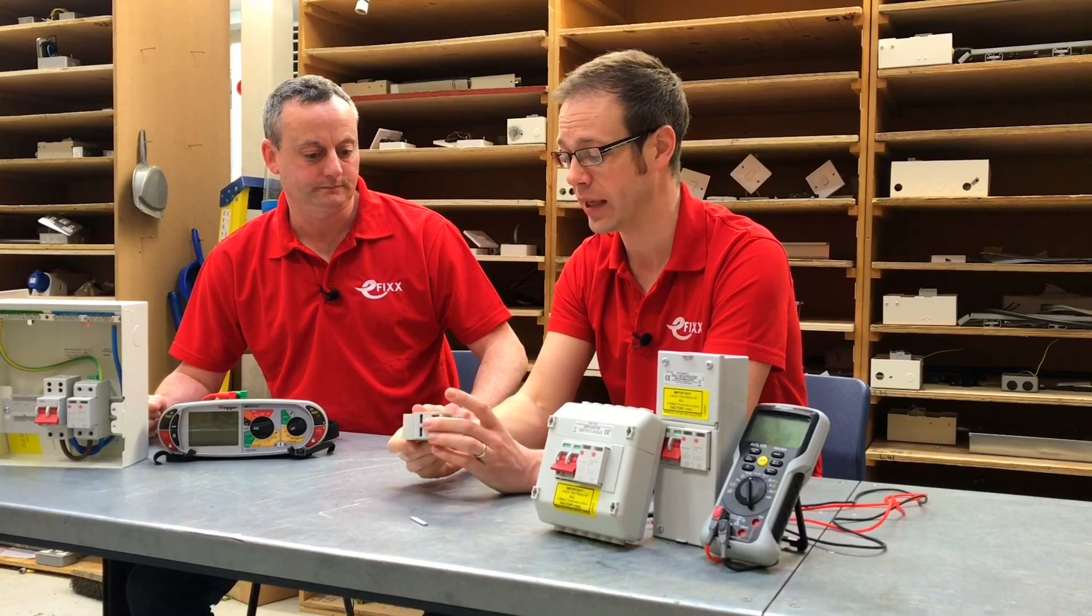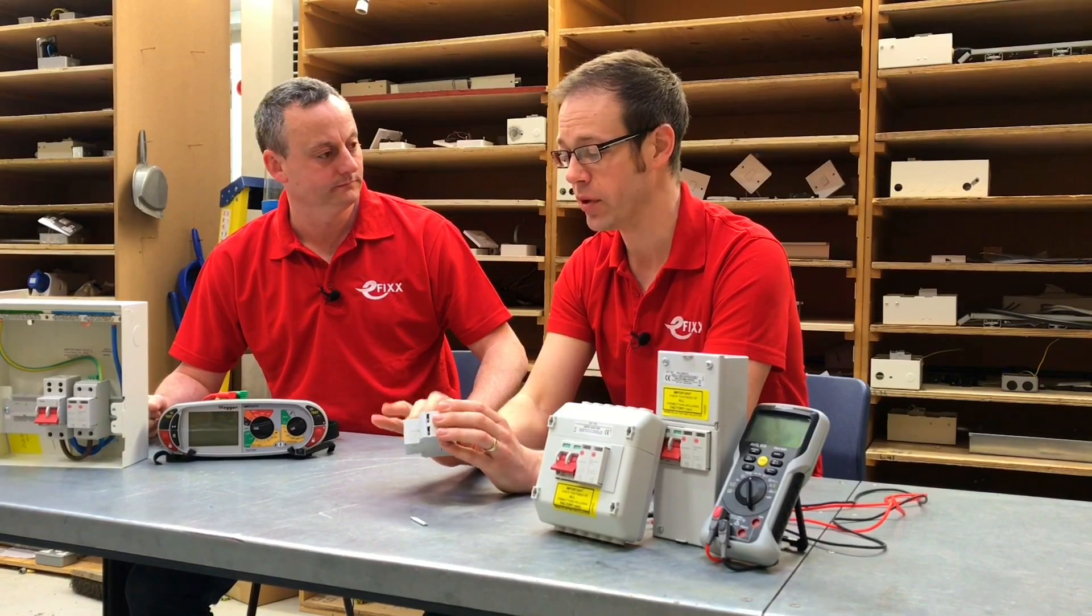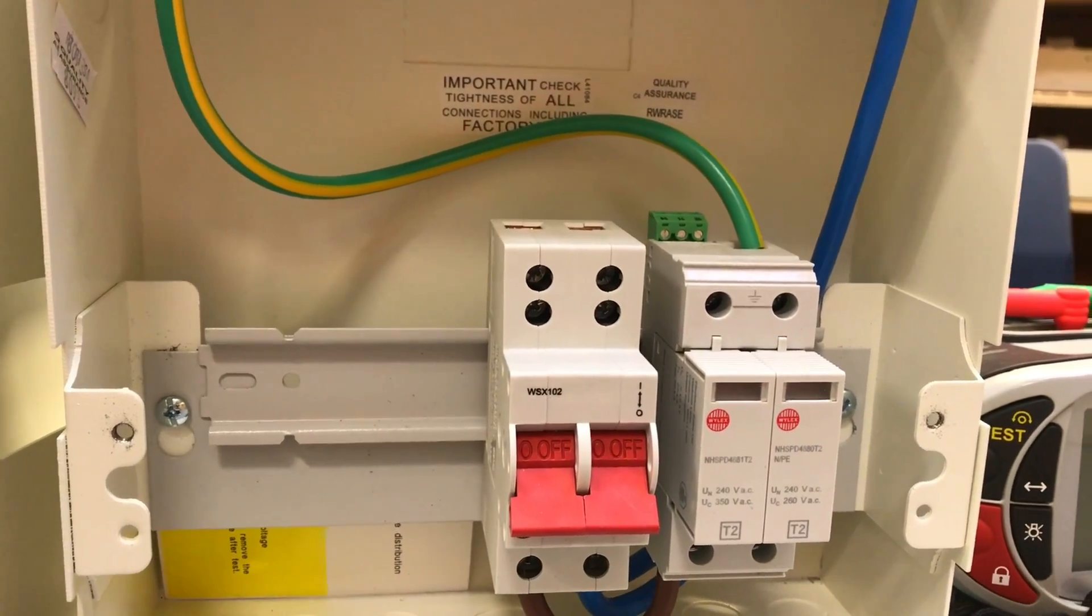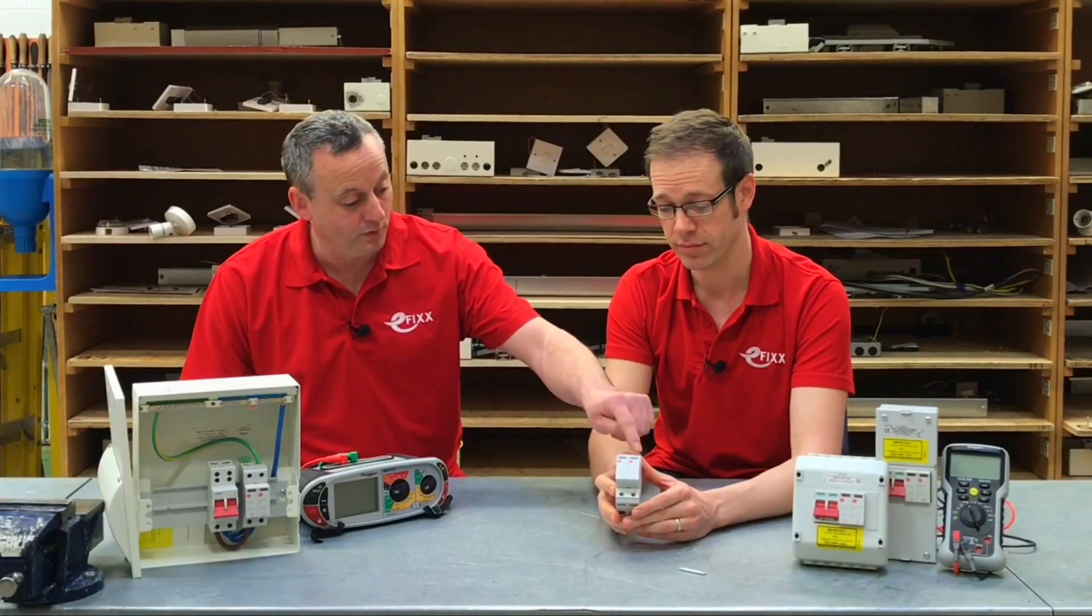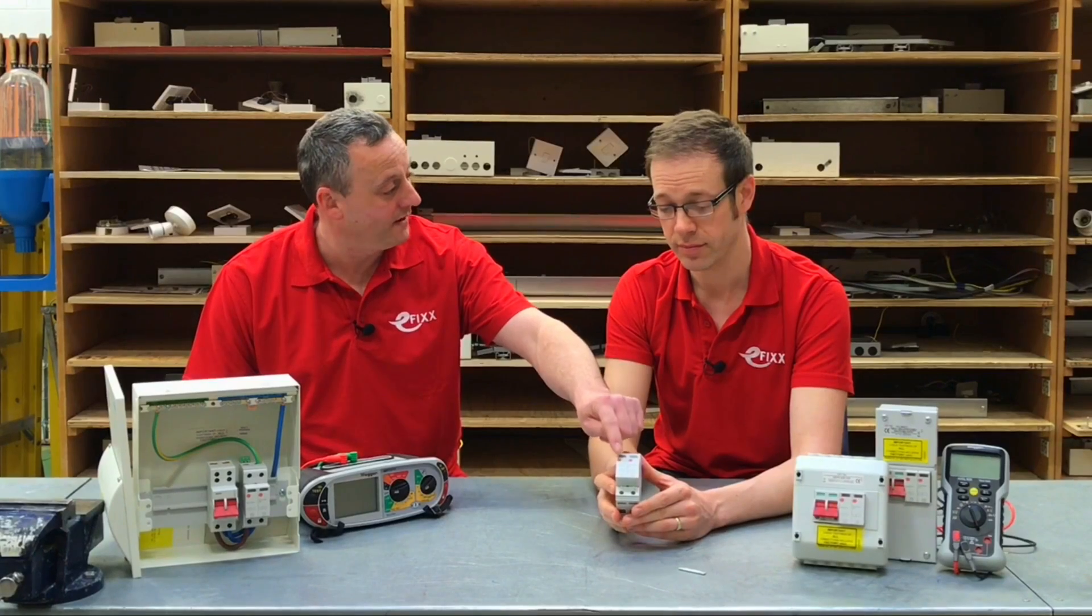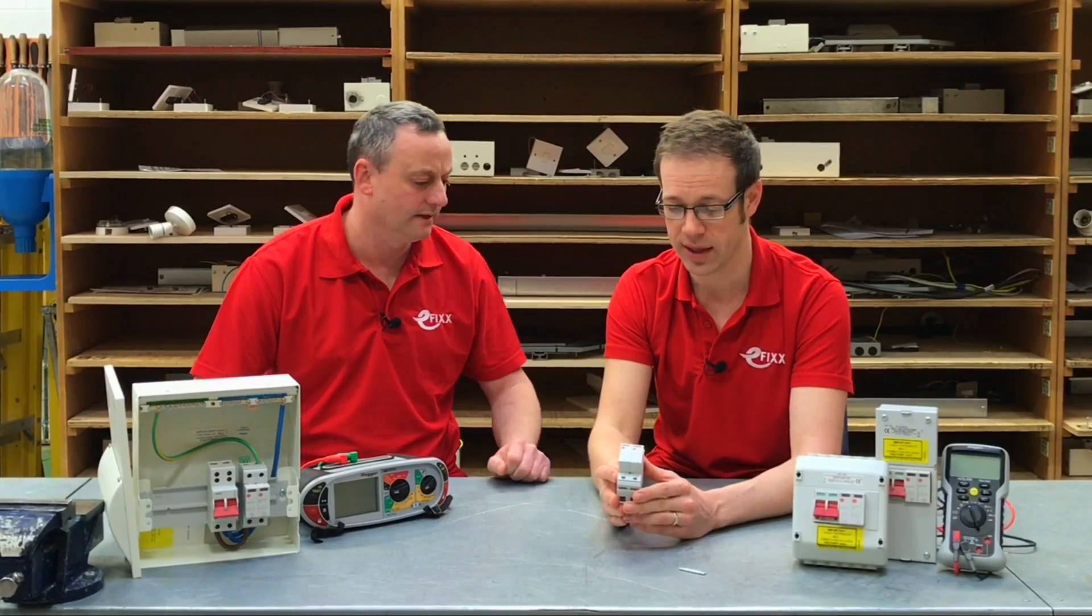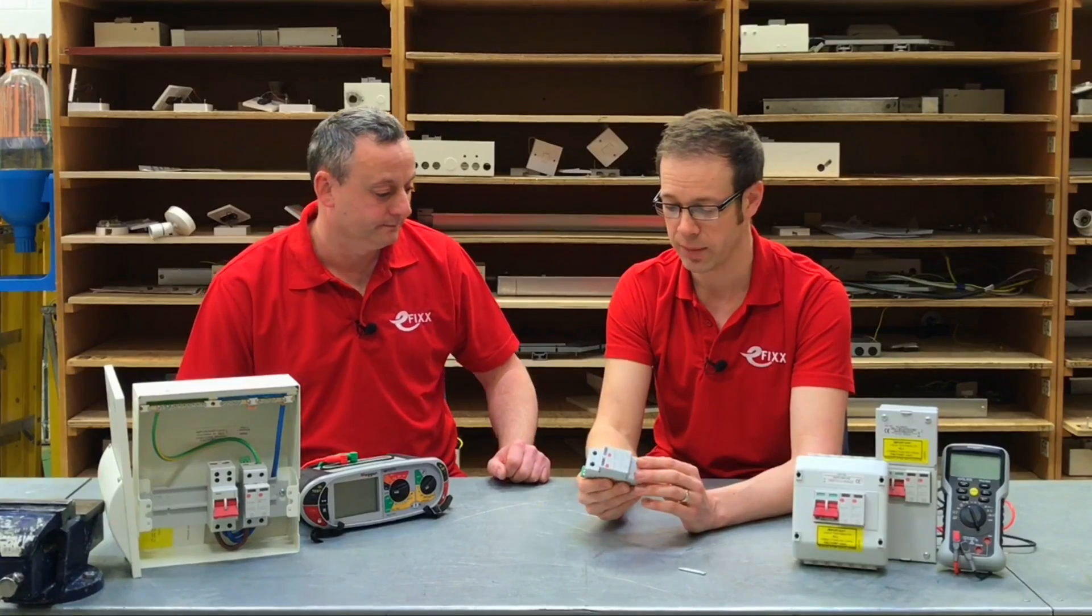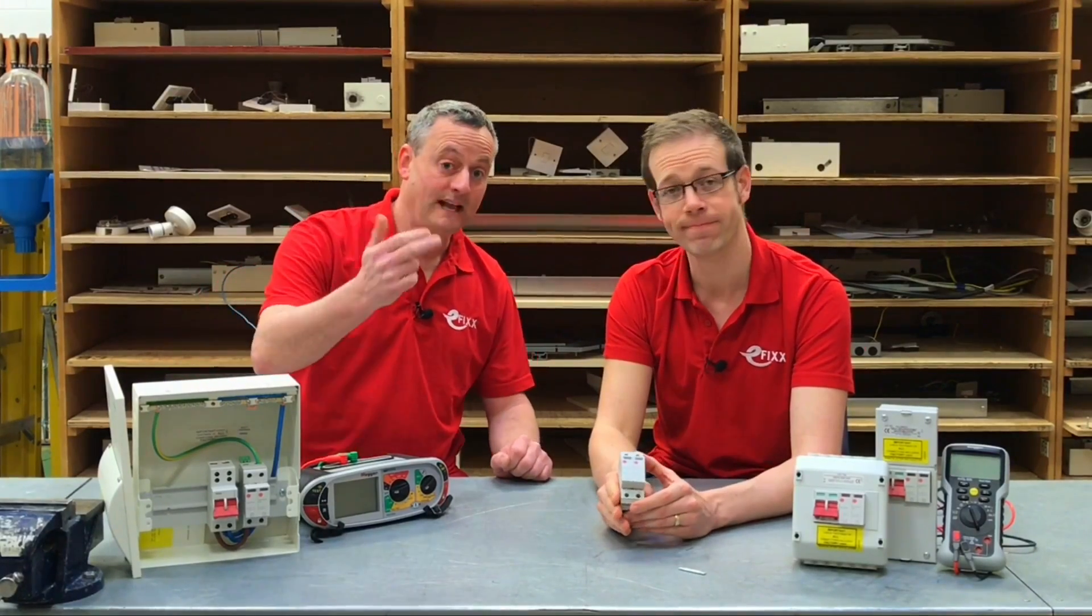We're going to break it down and look at the components inside the SPD. We've got a dual module where we've got an SPD in both the line and neutral connections. These are type 2 SPDs.